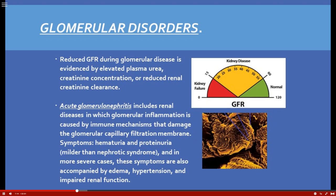Acute glomerulonephritis includes renal diseases in which glomerular inflammation is caused by immune mechanisms, toxins, or drugs — but most often an immune mechanism. Symptoms are usually hematuria and proteinuria, much milder than nephrotic syndrome. In more severe cases, symptoms are also accompanied by edema, hypertension, and impaired renal function.